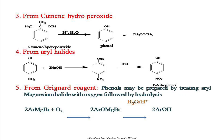The next method is from the Grignard reagent. Phenols can also be prepared from Grignard reagents by treating aryl magnesium halide with oxygen followed by hydrolysis. This is the Grignard reagent — an organometallic compound with a halide group. We react this Grignard reagent with oxygen, which is introduced between the aromatic carbon and the magnesium bromide, and on further hydrolysis results in phenol.